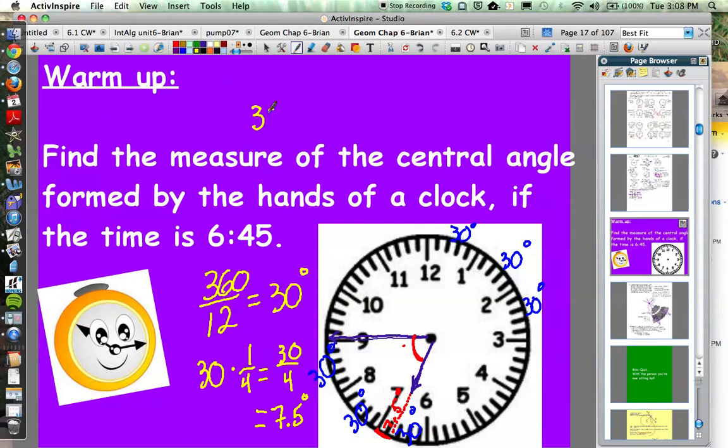So we've got 30 degrees plus 30 degrees plus 7.5 degrees. So 30 plus 30 plus 7.5 would be 67.5 degrees.